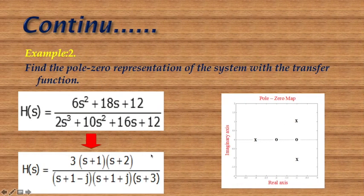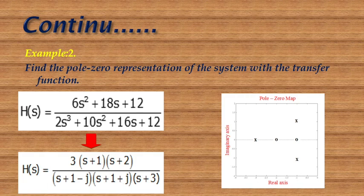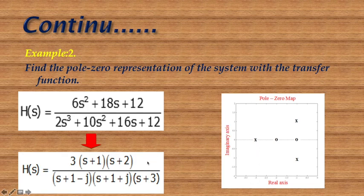Next example: find the pole-zero representation of a system with a given transfer function H(s). Setting the denominator equal to zero gives poles at S equals minus 1 plus j1, minus 1 minus j1 (complex conjugate poles), and S equals minus 3. Setting the numerator equal to zero gives zeros at S equals minus 1 and S equals minus 2. The constant term K equals 3.